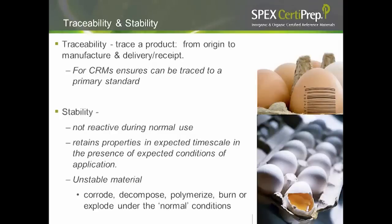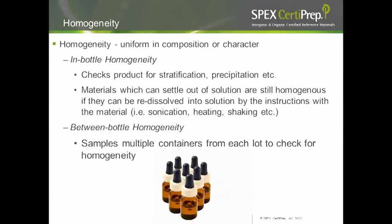Unstable material would corrode, decompose, polymerize, burn, or explode under what would be considered normal conditions. For homogeneity, there are two different ways of determining it: in-bottle homogeneity, which checks for product stratification or precipitation, and between-bottle homogeneity, where a manufacturer makes a large lot of material bottled into separate units and a subset of five to ten bottles is sampled to check for homogeneity across the lot.